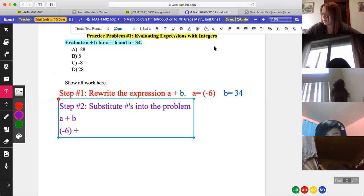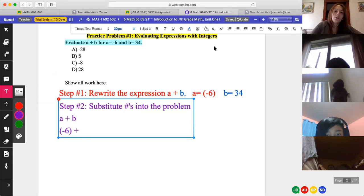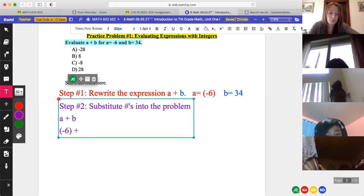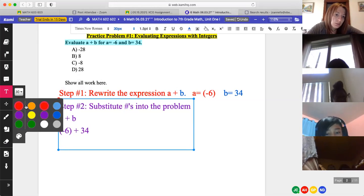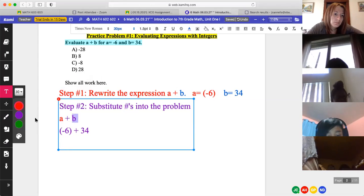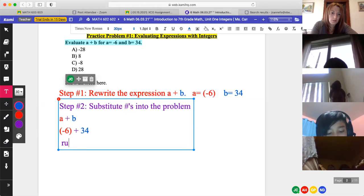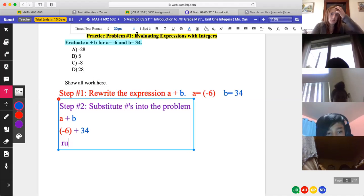So what I did was that I know that we're going to have to add both of A and B because if you read the problem, it says, you know, like add. So step one was to rewrite the expression. Step two is to substitute. So negative six plus 34 and that equals to 28. So, yeah. So I got a question for you. When you say that it equals to positive 28, what was the rule that you applied?